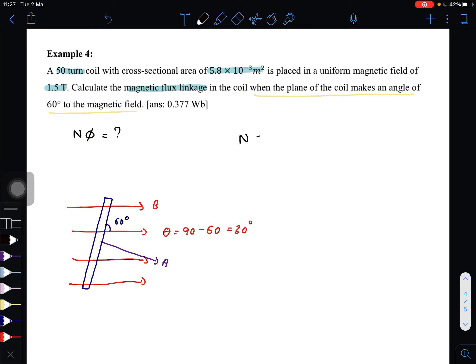So N times the magnetic flux is equal to... since magnetic flux is BA cos θ, just add N, the number of turns. Where number of turns here is equal to 50.